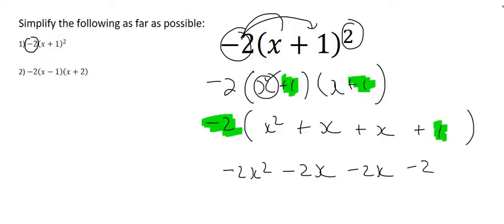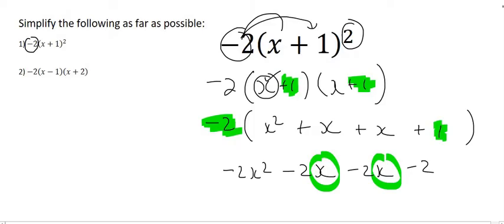The last step would be to go and identify any like terms. And we do have like terms. We've got an x over there and an x over there. And so I'm going to first just write down minus 2x squared because that stays as it is. Then minus 2 minus 2, well that's minus 4x. And then this minus 2 at the end will just be written as it is. And that'll be the answer for that one.